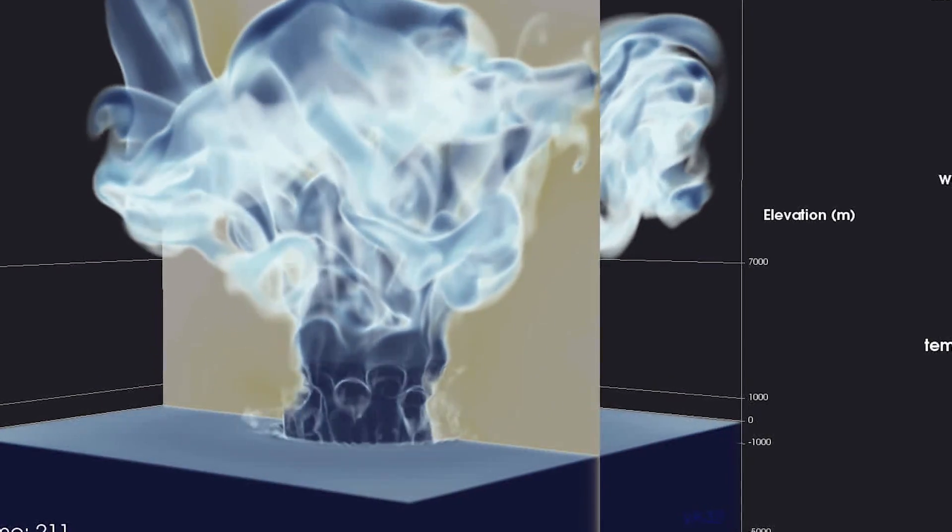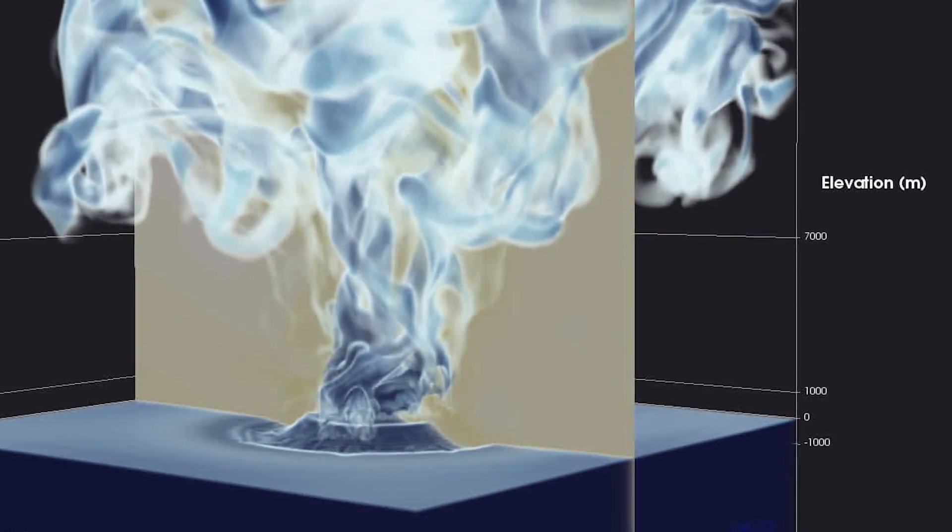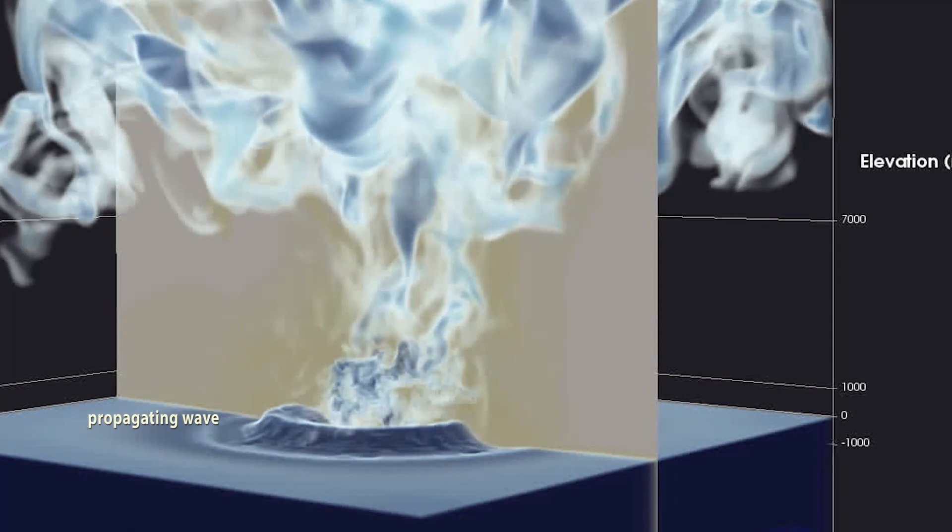Pressure waves in both the air and water show differences in the transfer of kinetic energy. Colliding shock waves in the atmosphere and water, as well as the wind at the water's surface, hinder the creation of a propagating wave.